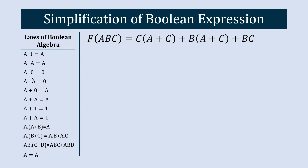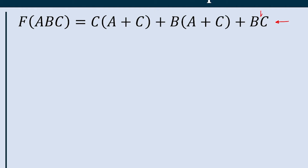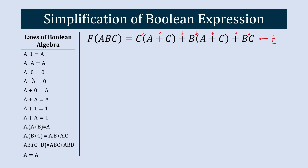In step number one, let me show you how many gates we need to use if we want to implement this equation. To implement it we'll use AND gate, OR gate, another OR gate, AND gate, OR gate, OR gate, and AND gate — one, two, three, four, five, six, seven. We are supposed to use seven gates to represent this equation. Now let's simplify it and see how many gates we'll use after simplification.